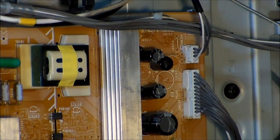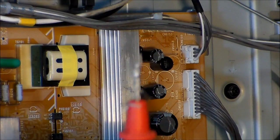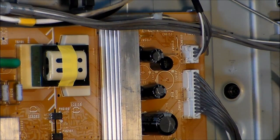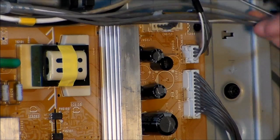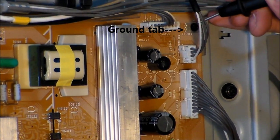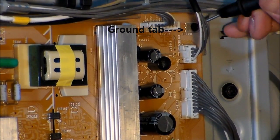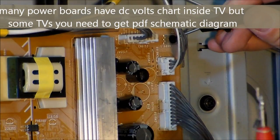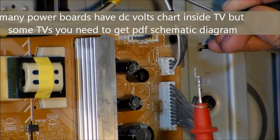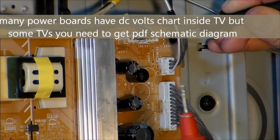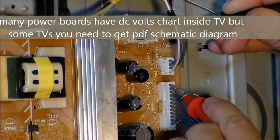You just twist it around like that. One lead on ground, which is usually the back chassis, or right here the metal tab on the corner of the board could be a good ground. So now that you have your special lead right there with this tiny tip, I'm gonna go ahead and test your voltages.